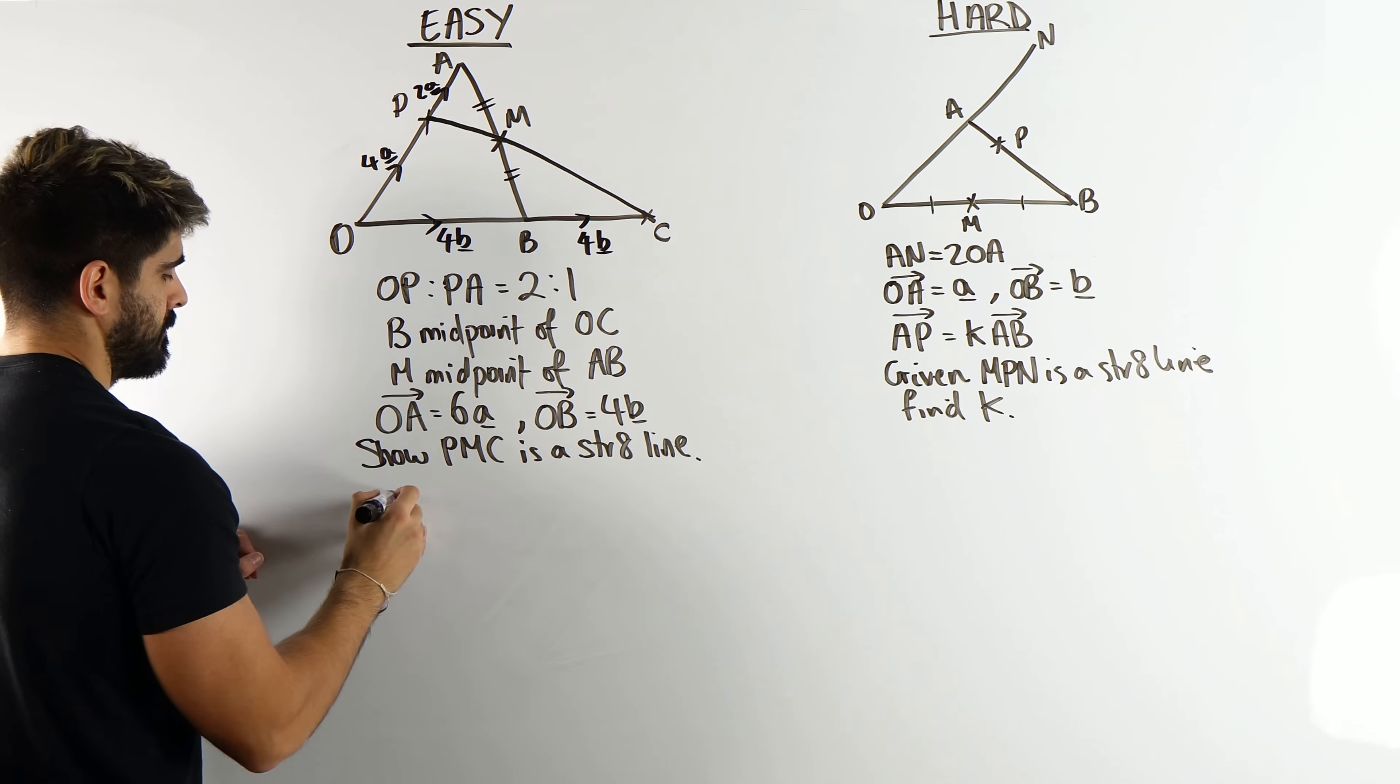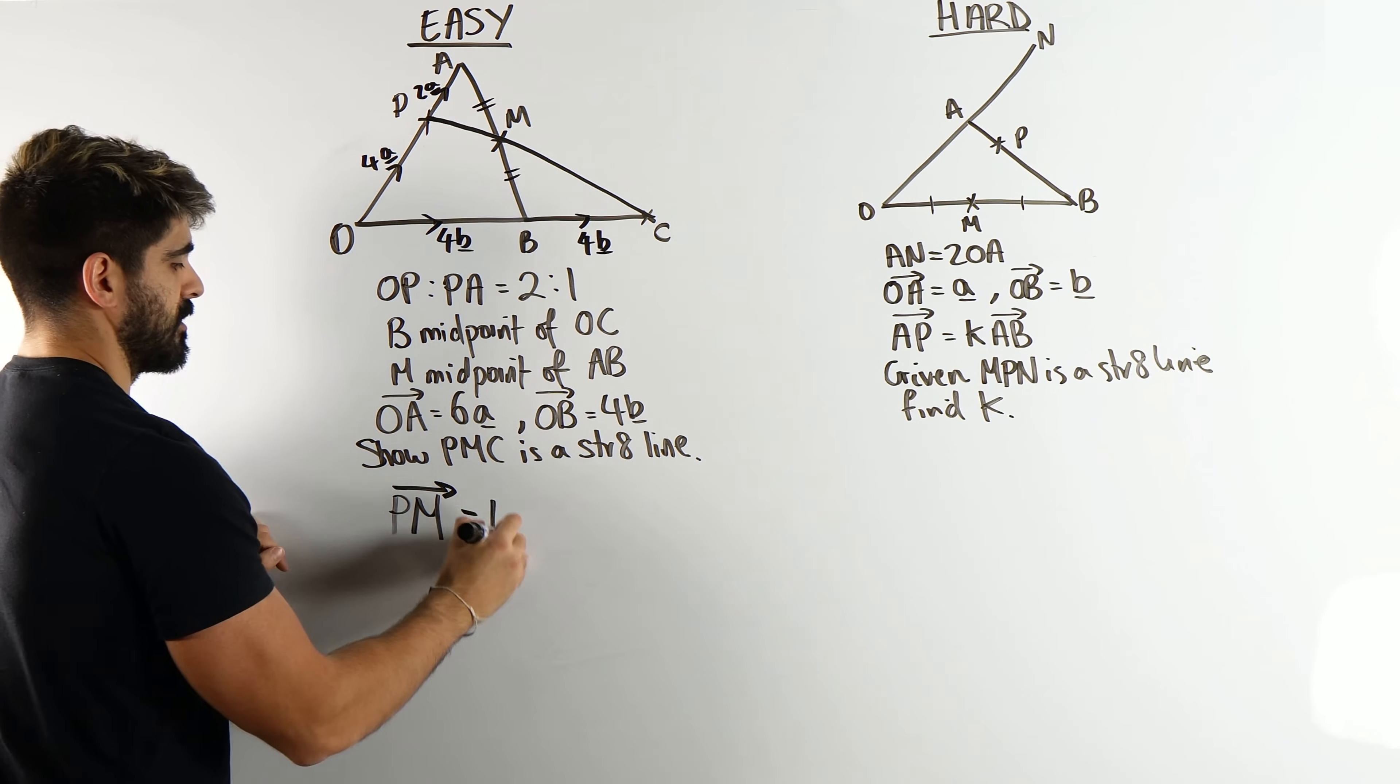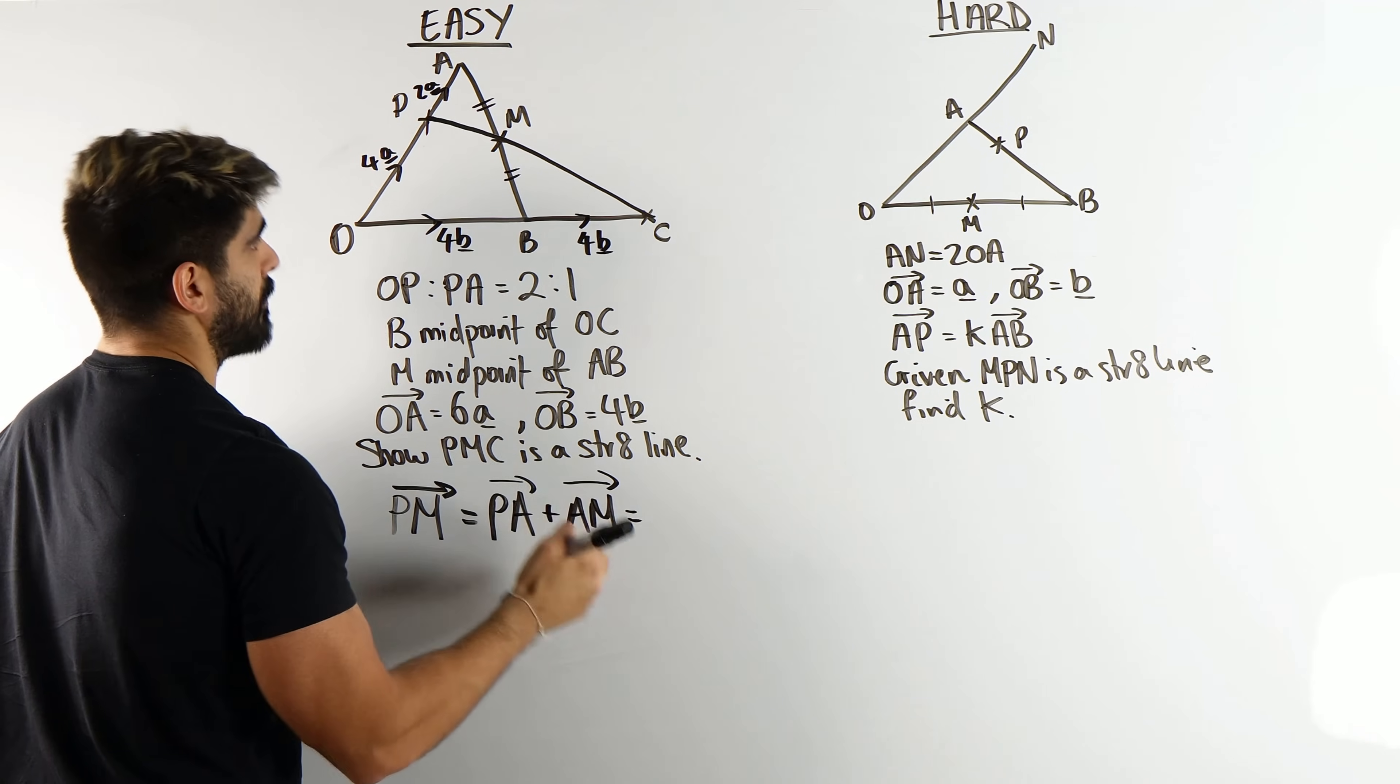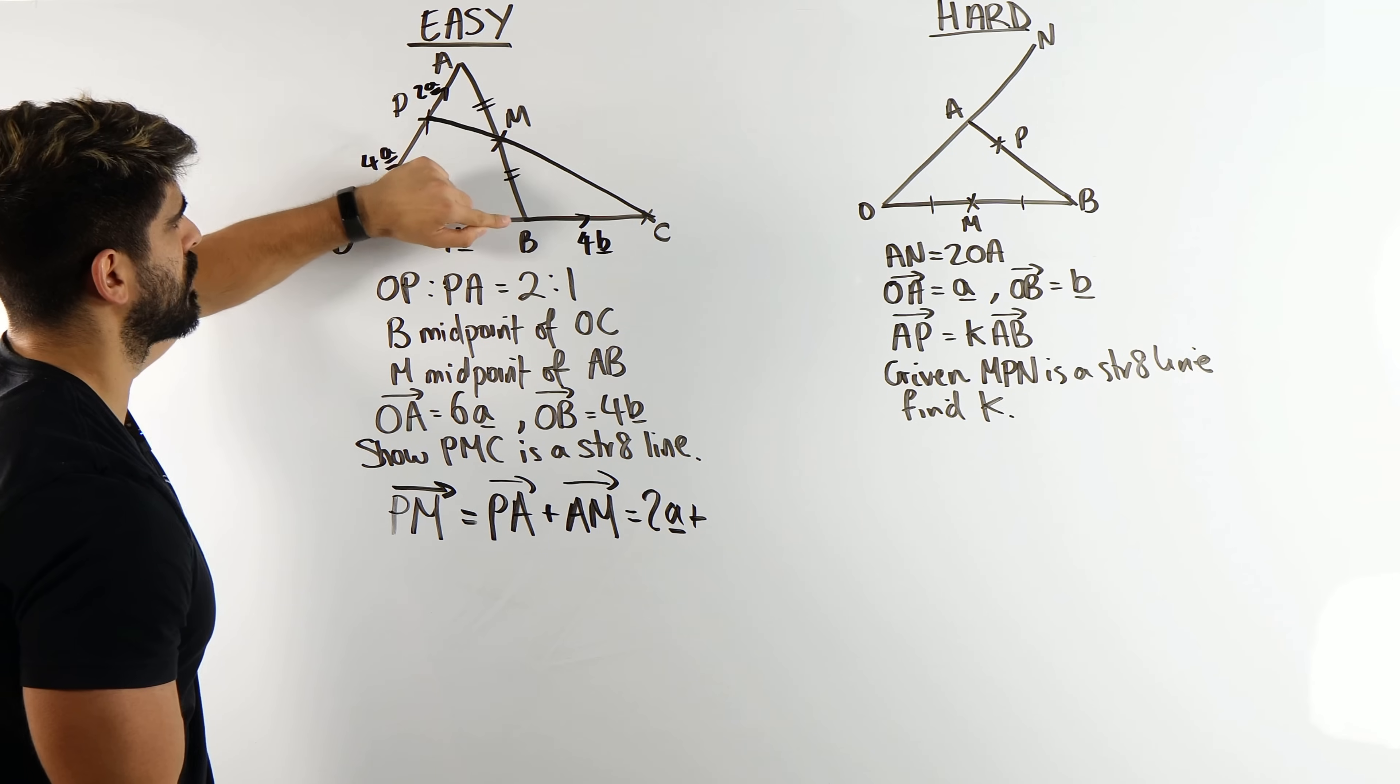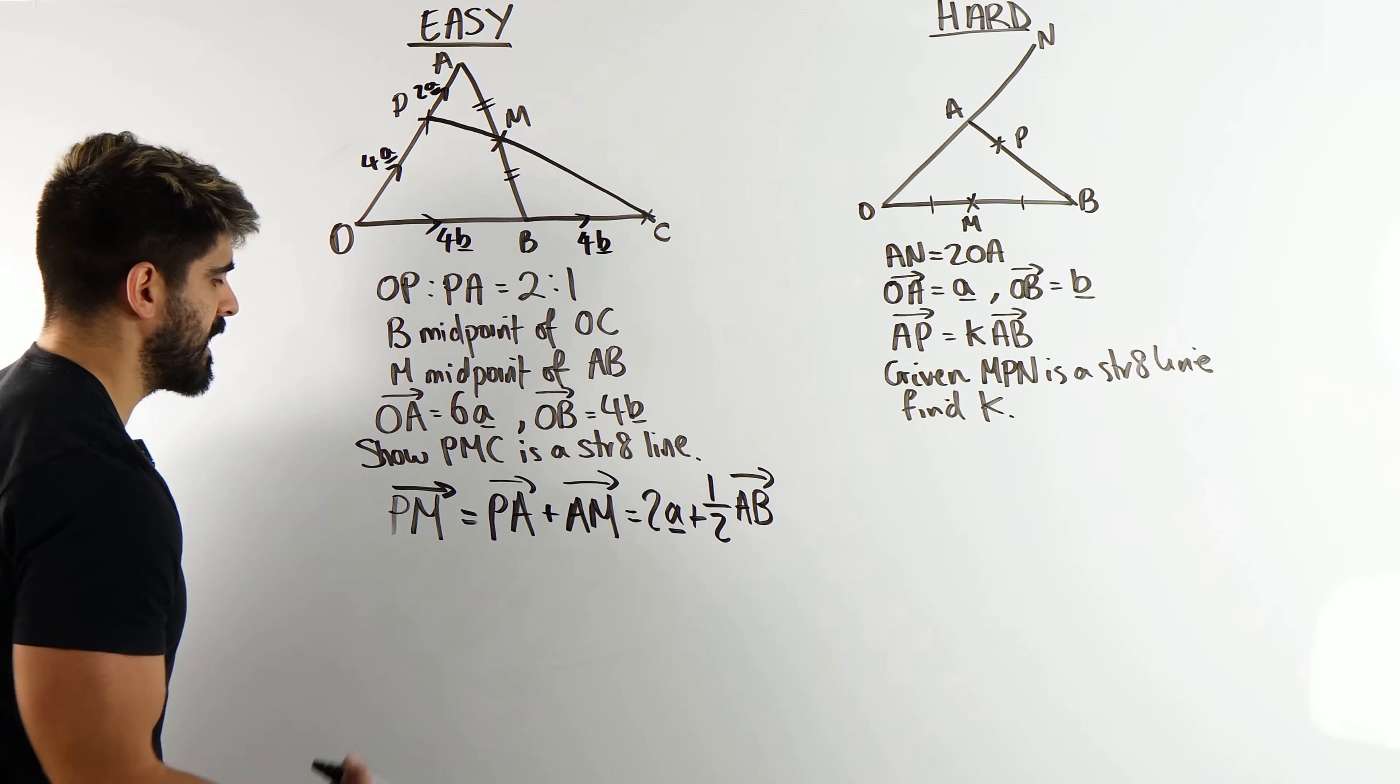We're going to do P to M. How do I go from P to M? Well, the quickest way is to go up to A and then to M. So we're going to go PA and then AM. And we know what PA is. We worked out it was 2A. And then A to M. Now, A to M, M is the midpoint of AB. So I'm actually going to say it's a half of AB.